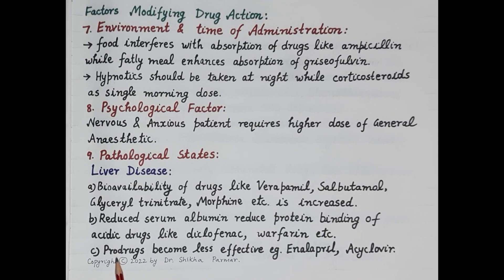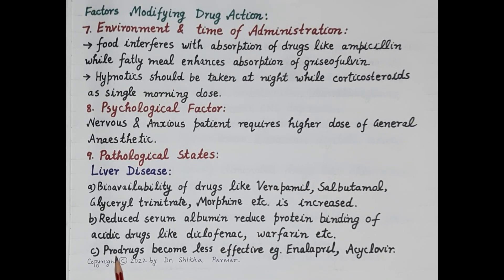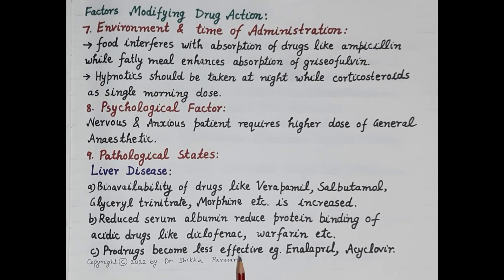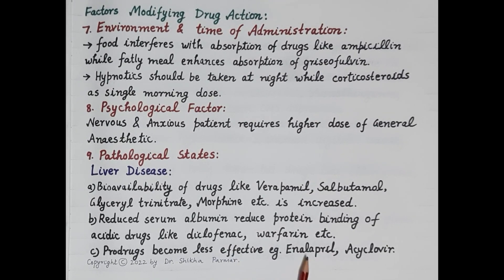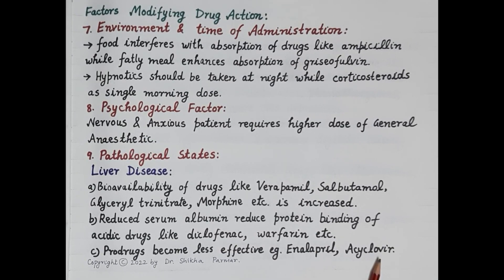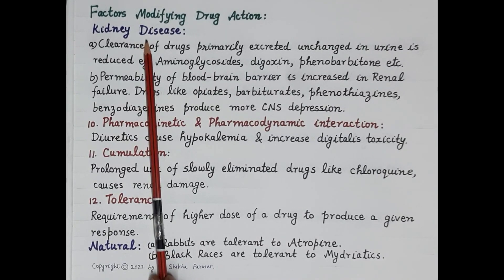Pro-drugs are inactive on their own and are metabolized in the body to produce a biologically active drug. Because of liver disease, pro-drugs become less effective since they are not properly metabolized. For example, enalapril and acyclovir are both pro-drugs that require metabolism to produce their active form and exert their action.